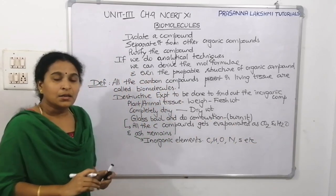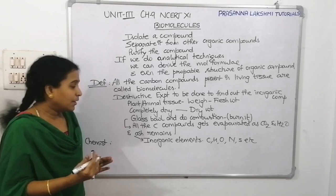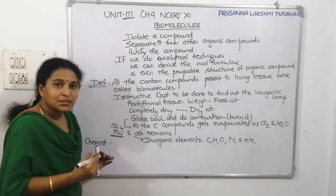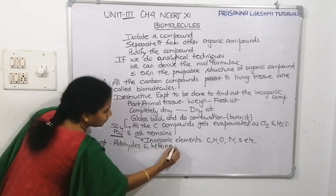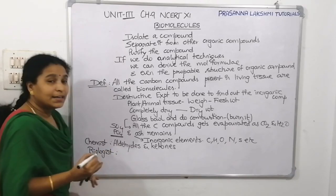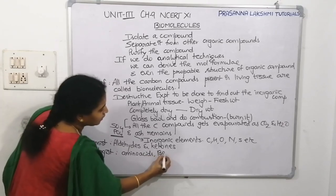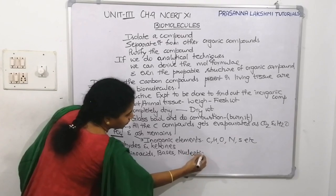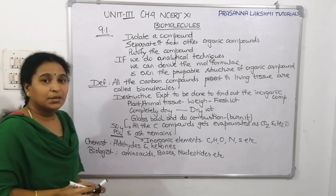From a chemistry point of view, a chemist identifies these inorganic compounds as sulfates and phosphates, and identifies the molecular formulas as aldehydes and ketones. Whereas a biologist identifies the compounds as amino acids, bases, and nucleotides. This covers how to analyze the chemical constituents — completing topic 9.1 of the chapter on biomolecules.